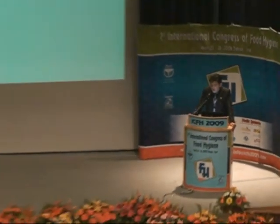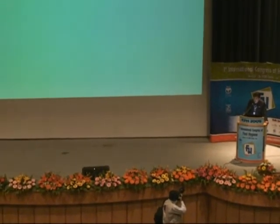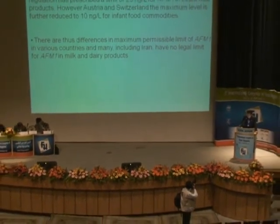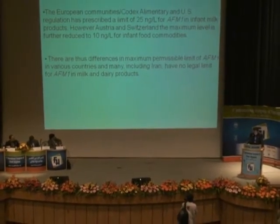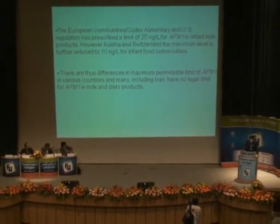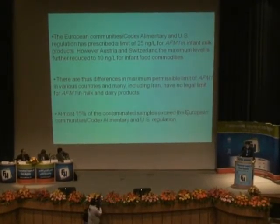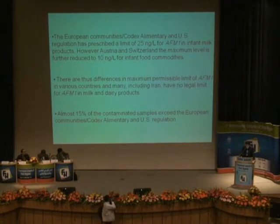The European Community Codex and US Regulation has prescribed a limit of 25 nanogram per liter for Aflatoxin M1 in infant milk products. However, in Australia and Switzerland, the maximum level is further reduced to 10 nanogram per liter for infant food commodities. There are thus differences in maximum permissible limits of Aflatoxin M1 across various countries. In Iran, there is no set limit for Aflatoxin M1 in milk and dairy products.